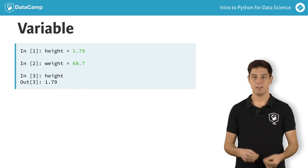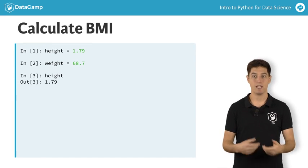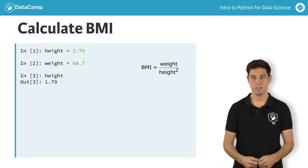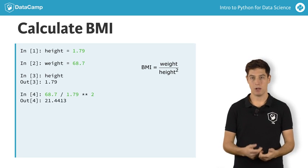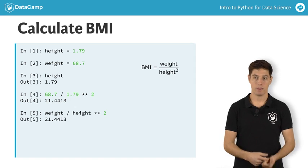Let's now calculate the body mass index, or BMI, which is calculated as follows, with weight in kilograms and height in meters. You can do this with the actual values, but you can just as well use the variables height and weight, like in here.